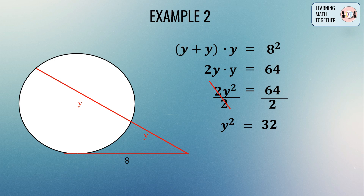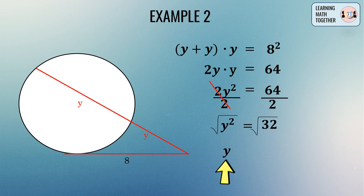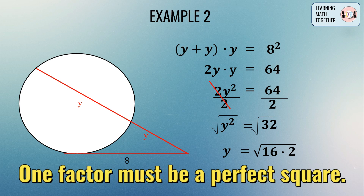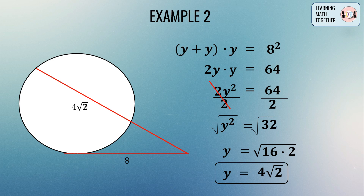To get rid of the exponent 2, we extract the square root of both sides. The square root of y squared is simply y. For the square root of 32, since it is not a perfect square, we factor it as 16 times 2. The square root of 16 is 4, taken outside the radical, leaving square root of 2. Therefore y equals 4 square root of 2, which is the length of both segments.